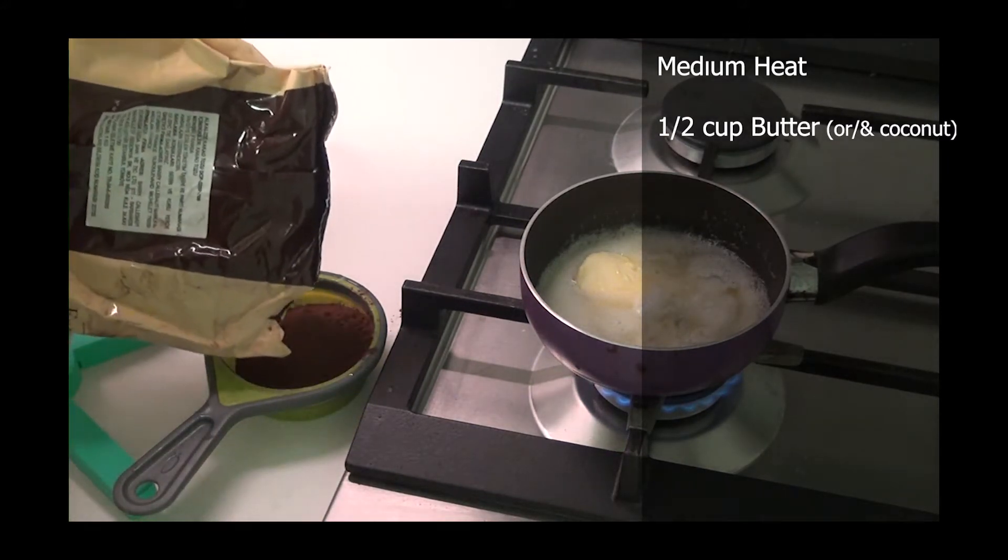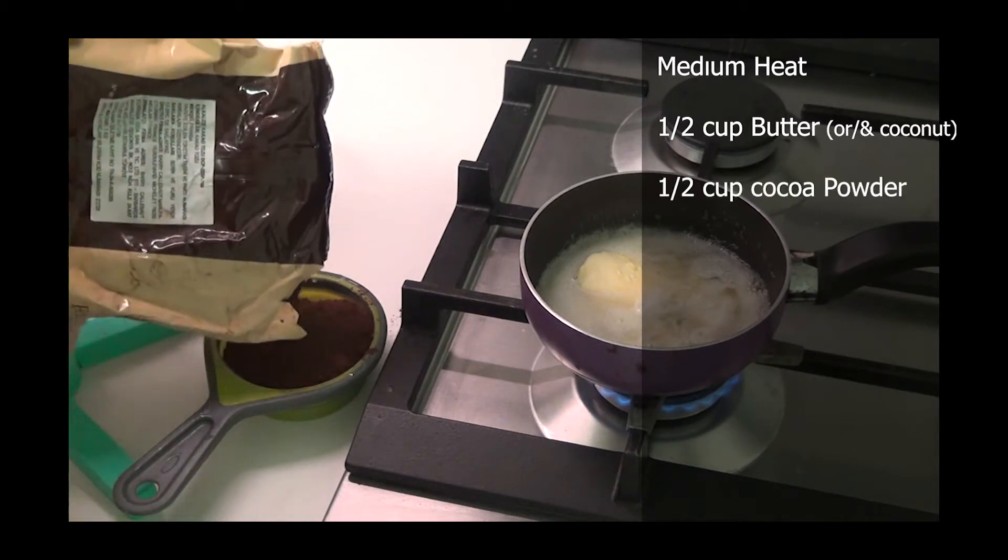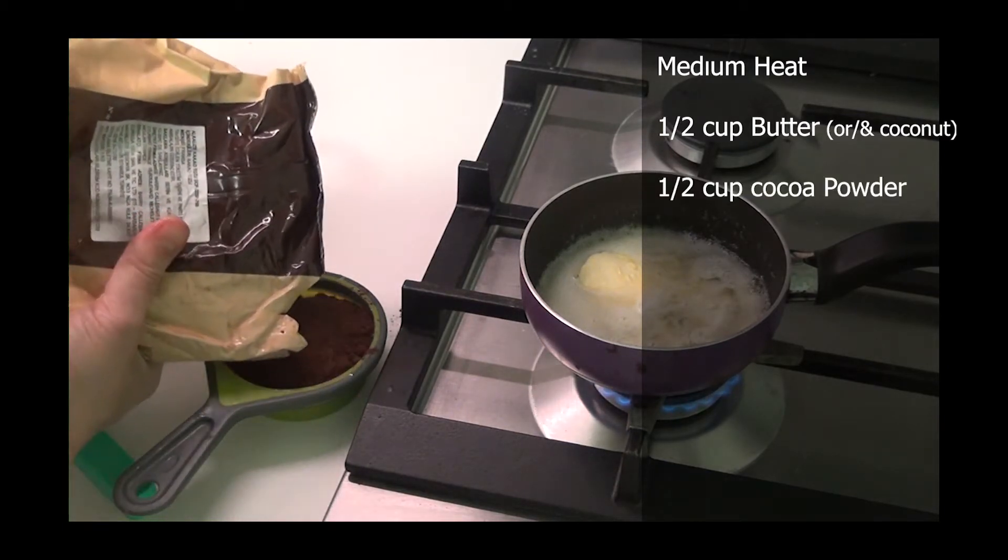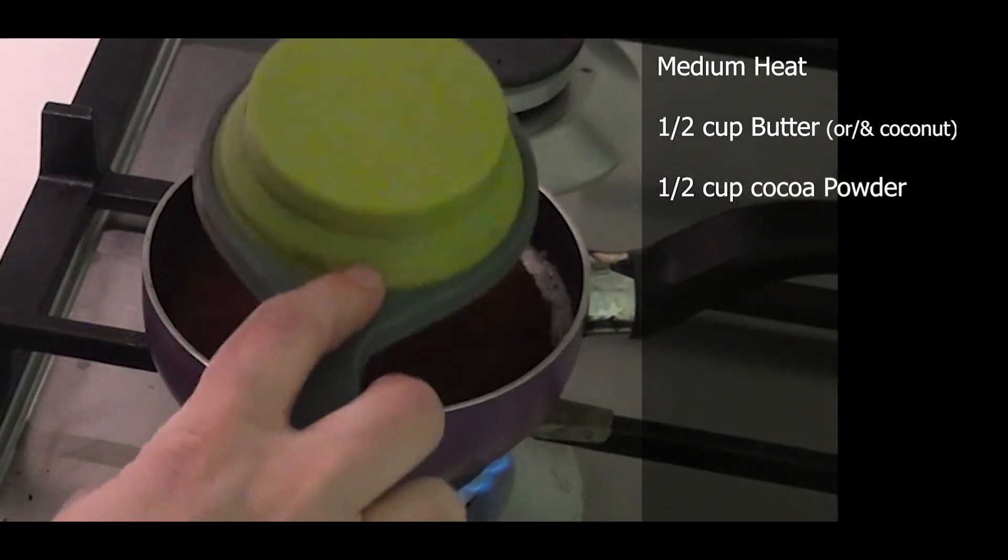When the butter melts, immediately add half a cup of cocoa powder and then turn off the heat.